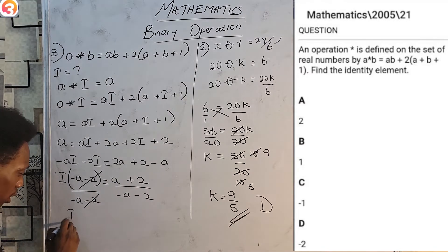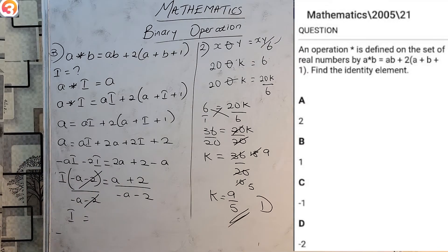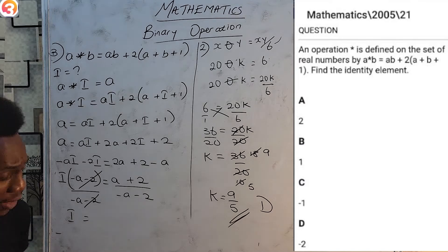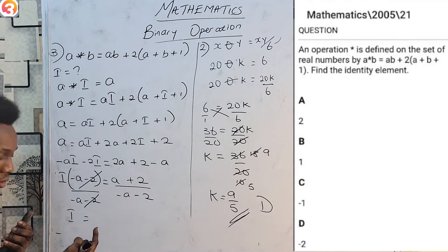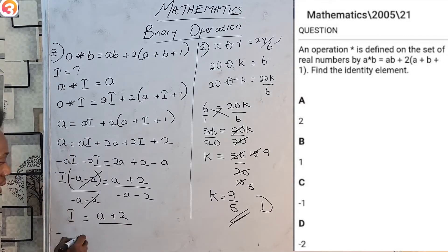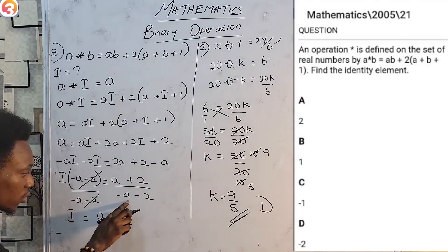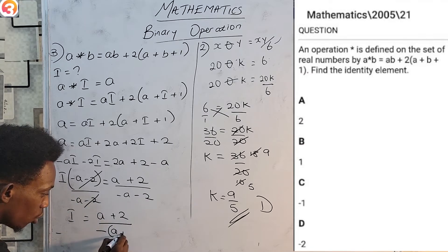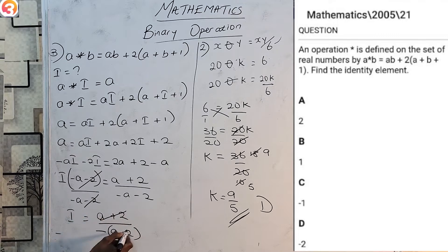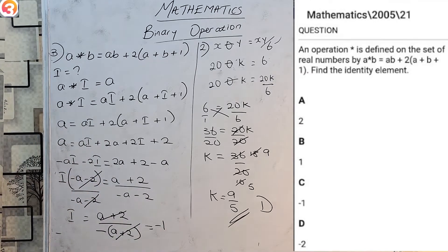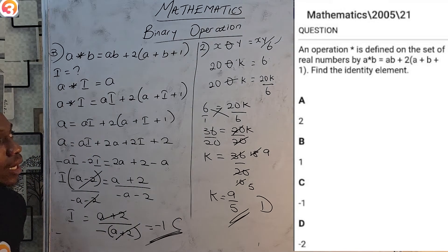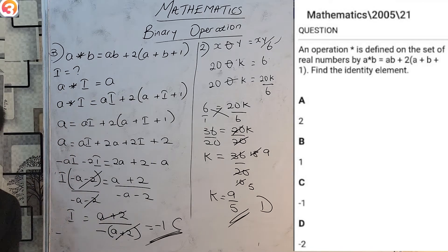When we factorize out the minus from the denominator, (a + 2) cancels with (a + 2) and we are left with −1, which is option C. The identity element is that element that when you operate on it you get yourself as the answer, while the inverse element is that element which when you operate on it you get the identity.